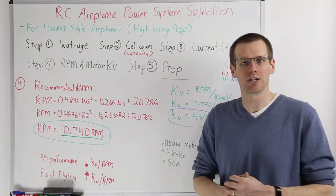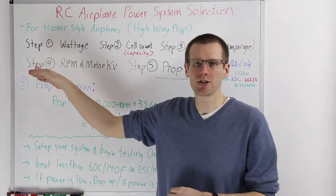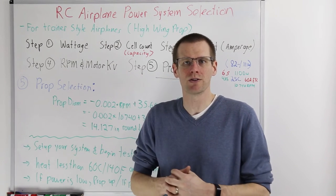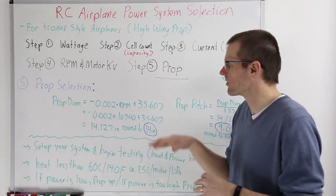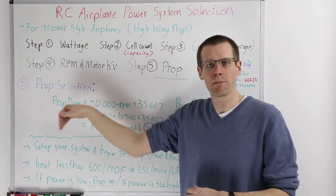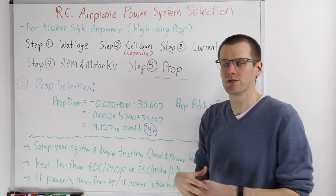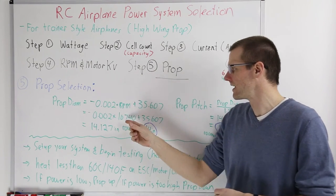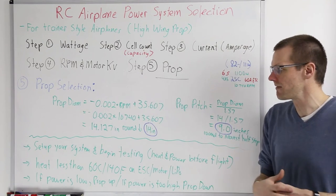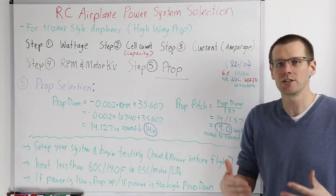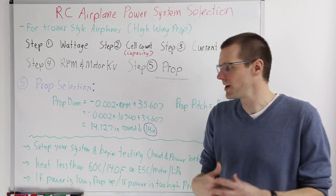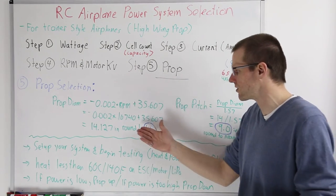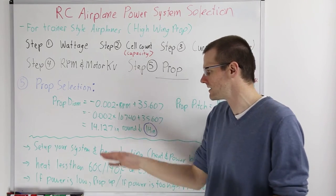Step five is propeller selection — the final step before testing. To calculate propeller diameter, use the formula: diameter = −0.002 × RPM + 35.607. Plugging in 10,740 RPM gives 14.127 inches. We always round down to the nearest whole number to be conservative, so our diameter is 14 inches. You could push to 15 if you're willing to take a small risk, but rounding down is the safer approach.